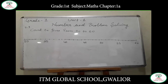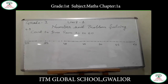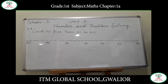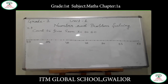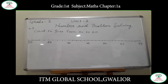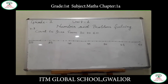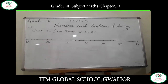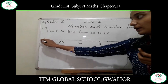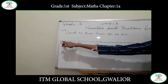In our previous question, we were counting in twos from 20 to 30. In this one, we have to count in fives. For counting in fives, we will count 4 numbers, skip them, and directly come to the 5th number.